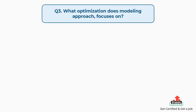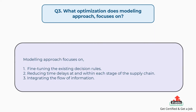Question number three: what optimization does the modeling approach focus on? The answer is the modeling approach focuses on: 1. Fine-tuning the existing decision rules. 2. Reducing time delays at and within each stage of the supply chain. 3. Integrating the flow of information.